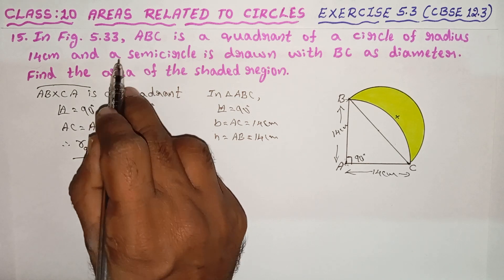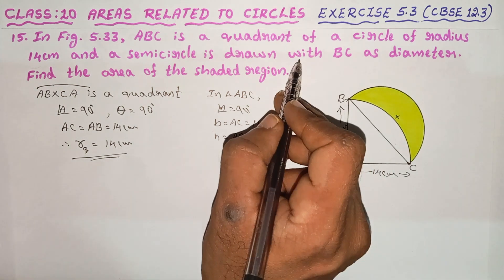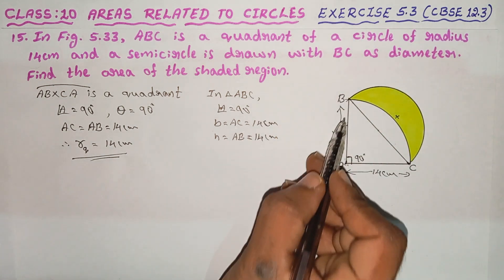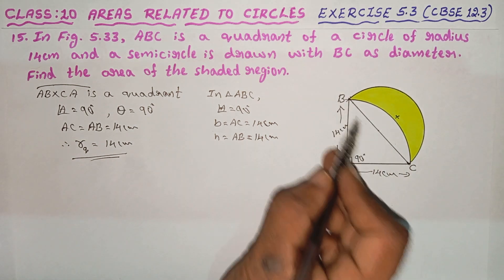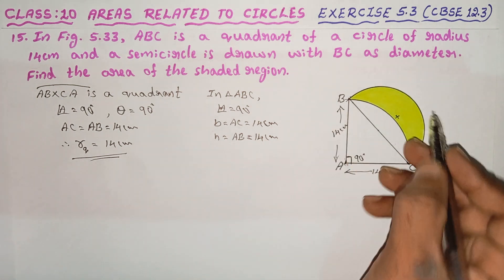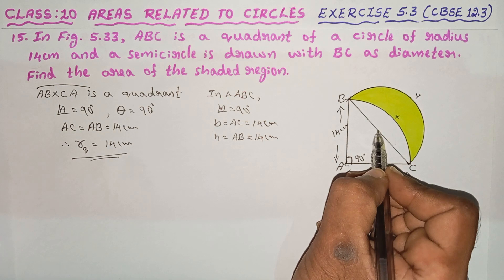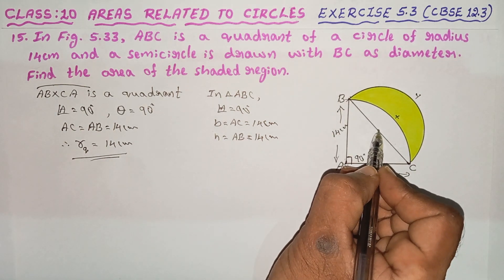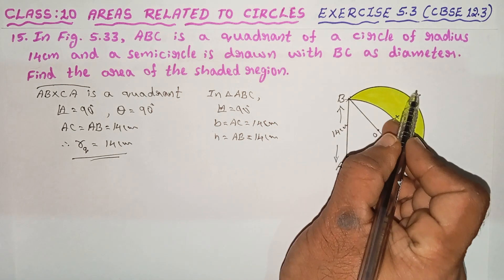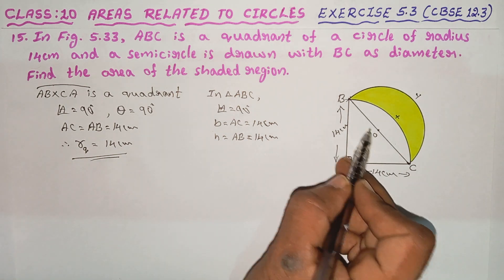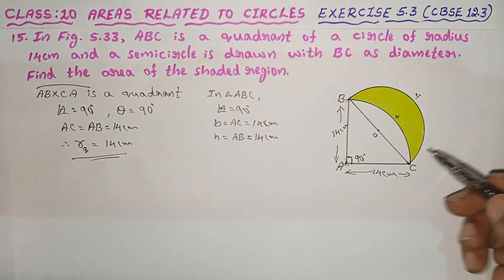The semicircle is drawn with BC as diameter. This is the diagram of BC as diameter, so you can draw a semicircle. Consider the region OBYCO — this total is the semicircle.